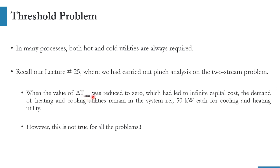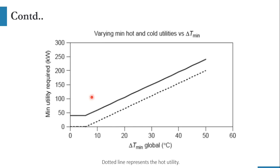If we decrease the value of delta T minimum — as discussed in our previous lecture, the link is in the description — when the value of delta T minimum was reduced to zero, which led to infinite capital cost, the demand for heating and cooling utilities remained the same. However, if you reduce delta T minimum for all the cases discussed so far, you will find a system in which at a certain value of delta T minimum reduction, one utility has become zero. That is where we call the system a threshold system.